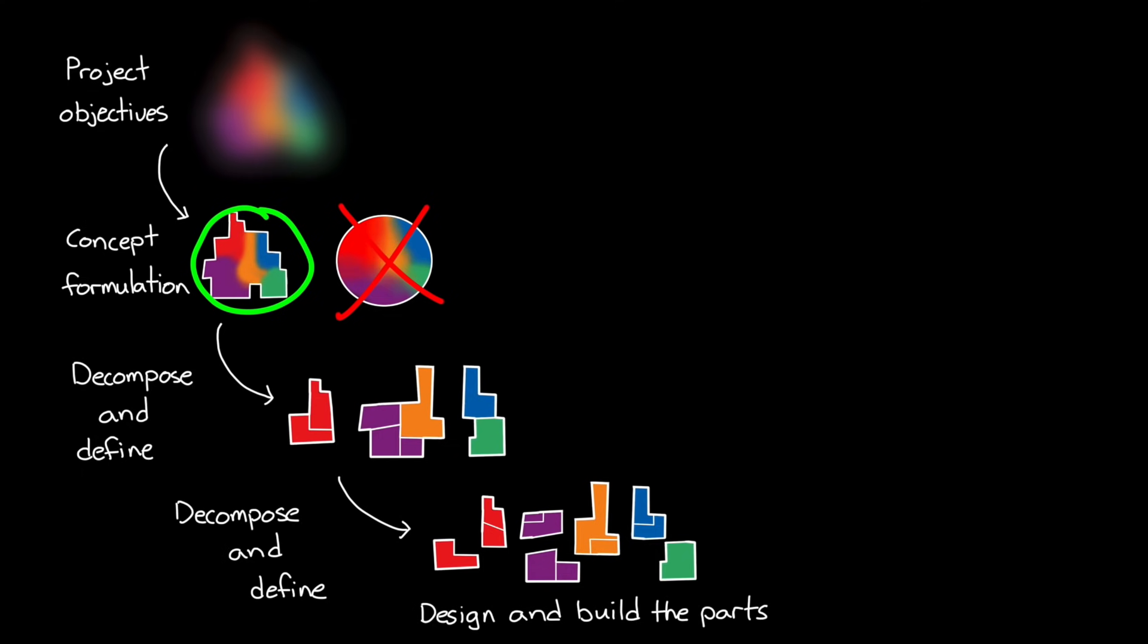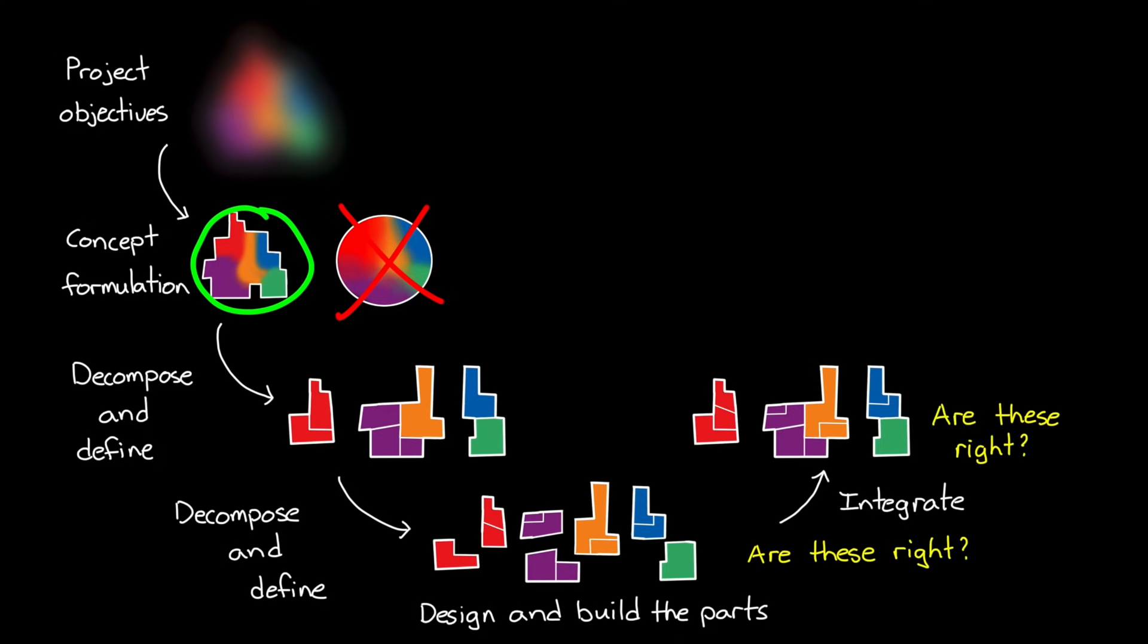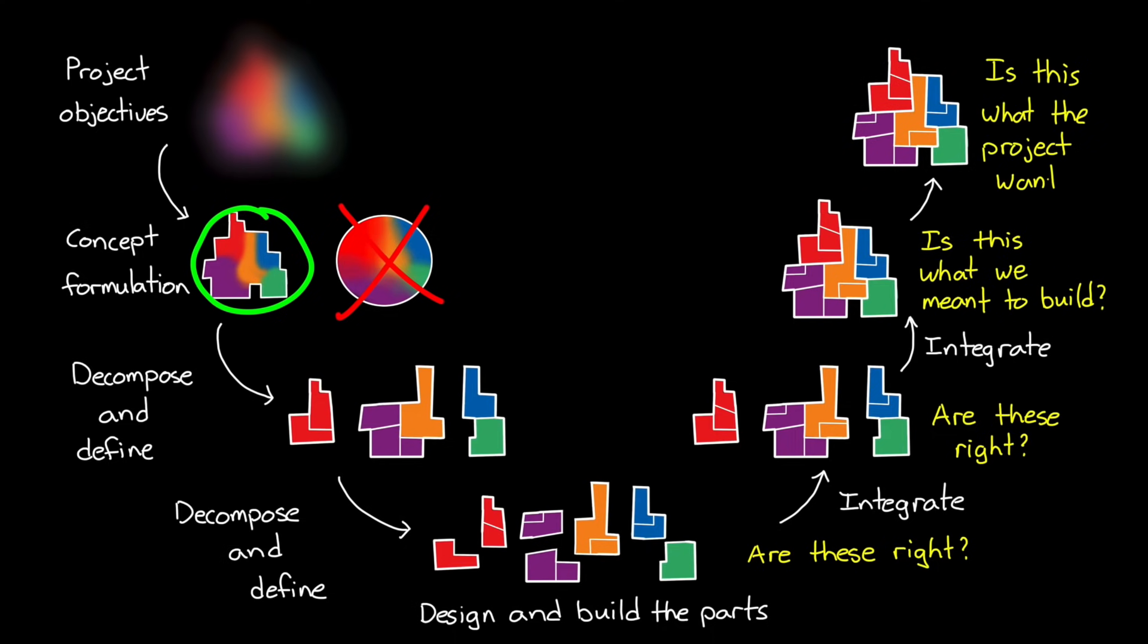And then, once these components are designed and built, systems engineering is also the process of ensuring that each component does what it's supposed to do, and then the integration of those components do what they're supposed to do, and so on, until you have a functioning top-level system that satisfies the original objectives.